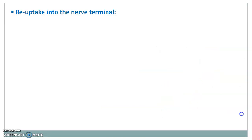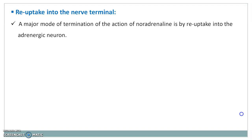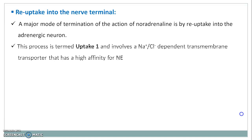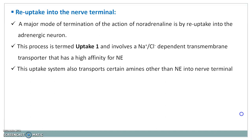The first process is reuptake into the nerve terminal. A major mode of termination of the action of noradrenaline is reuptake into the adrenergic neuron. This process is termed uptake 1 and involves a sodium chloride-dependent transmembrane transporter that has high affinity for norepinephrine. This uptake system also transports certain amines other than norepinephrine into the nerve terminal.